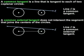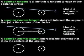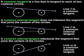A common internal tangent intersects the segment that joins the centers of the circles. For example, in the diagram shown, line M is a common internal tangent because it intersects the segment that joins the centers of the circles.